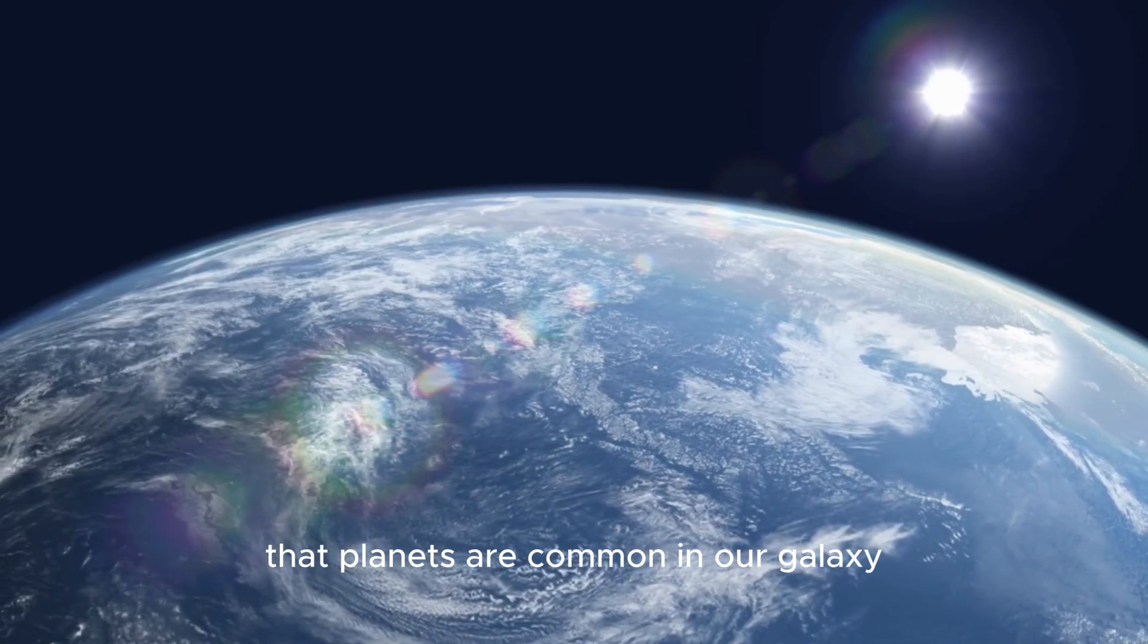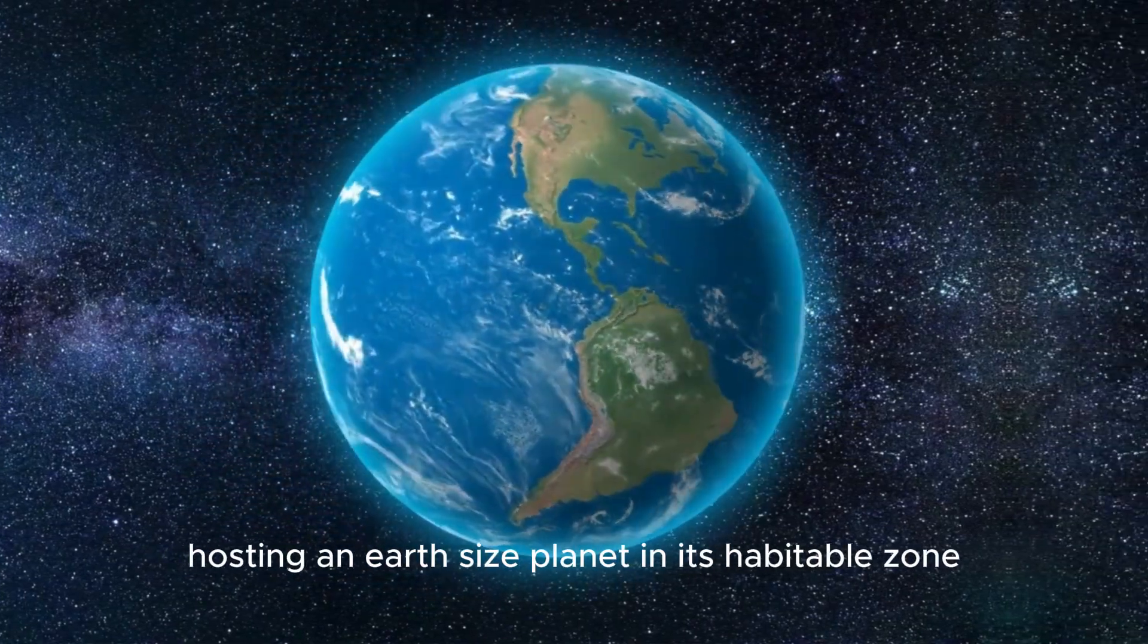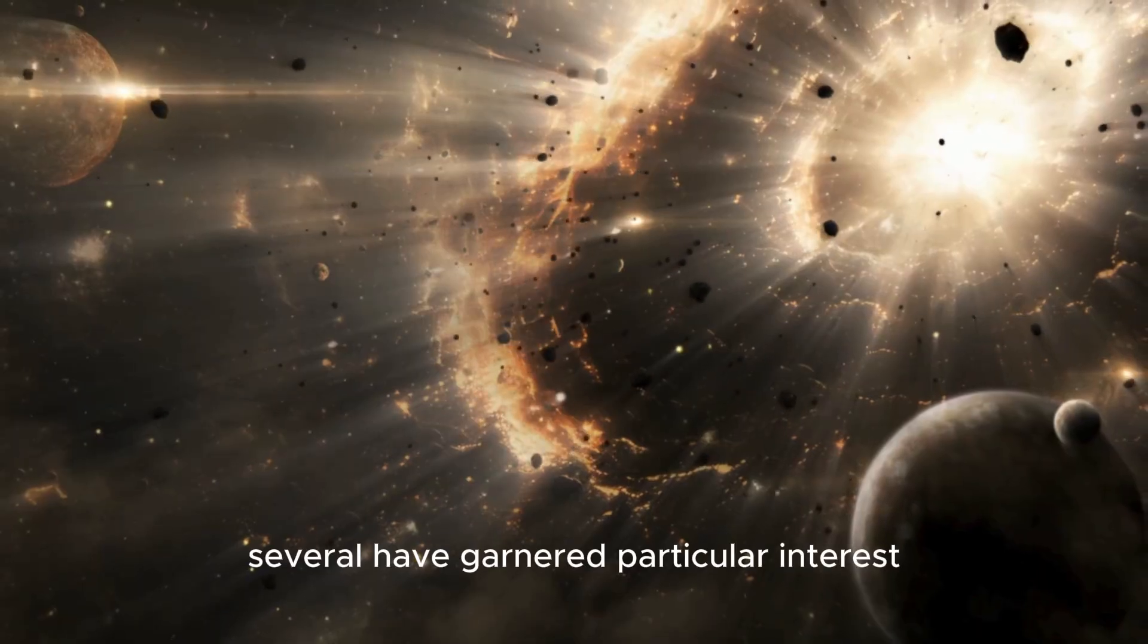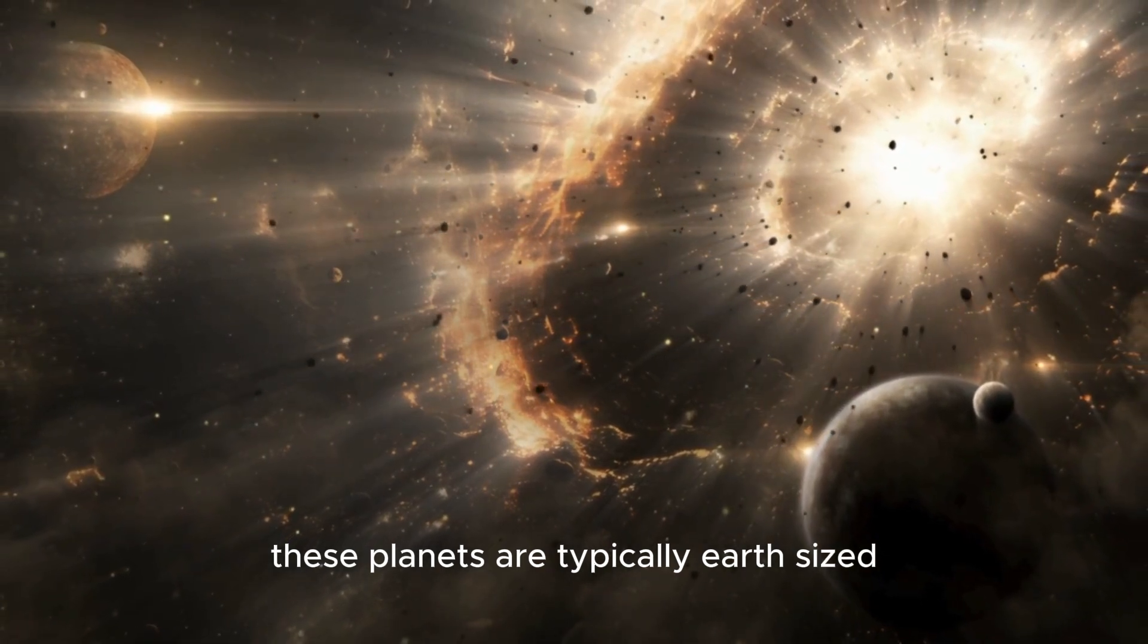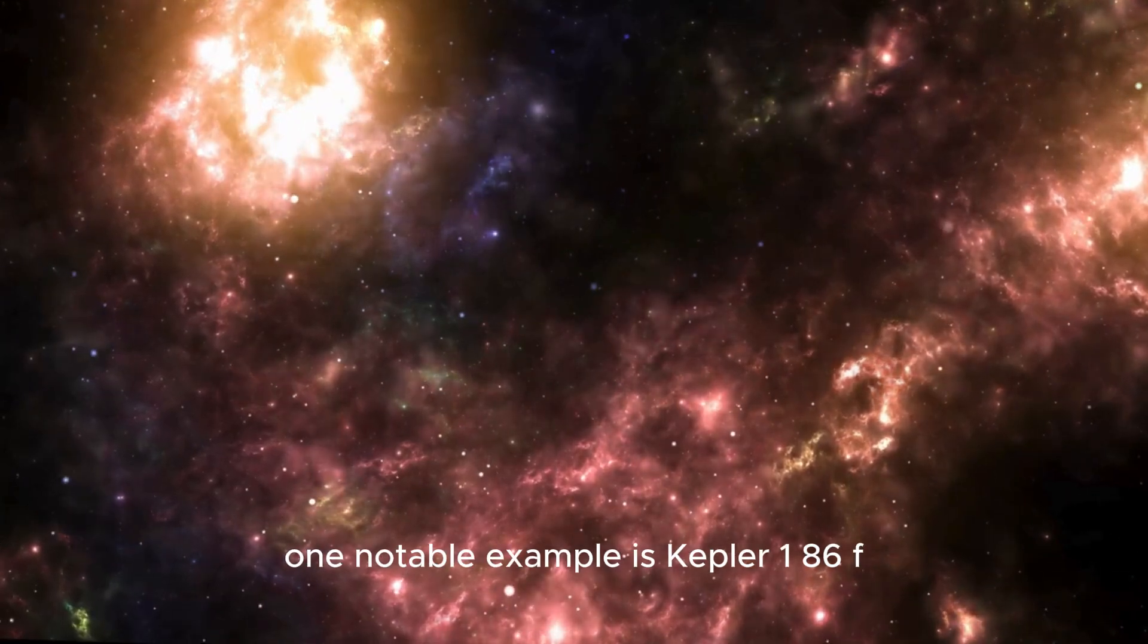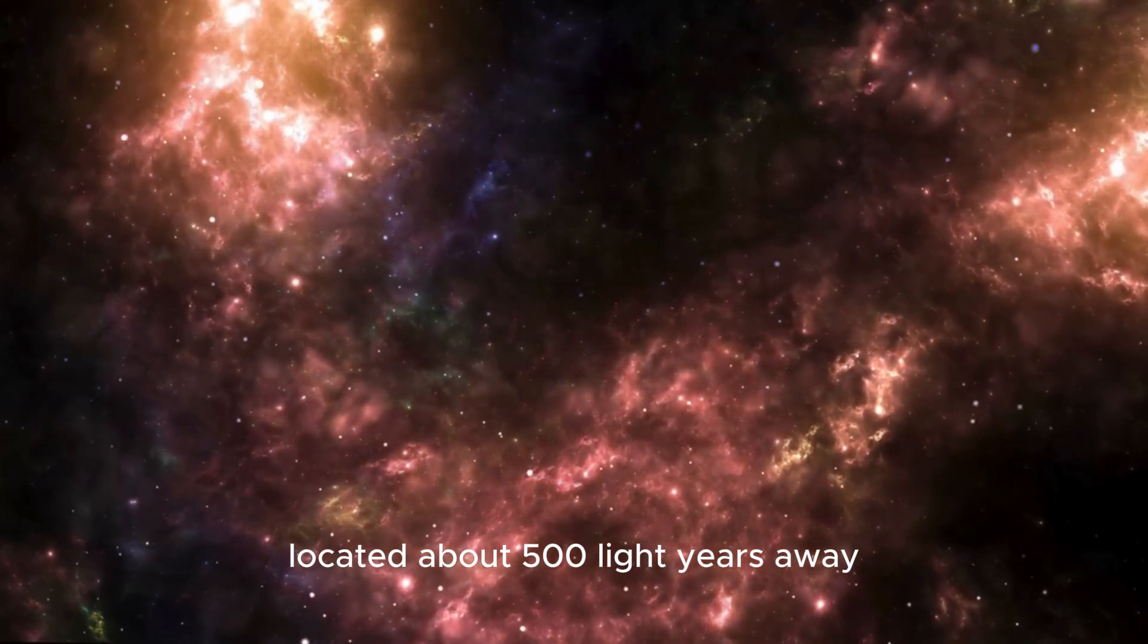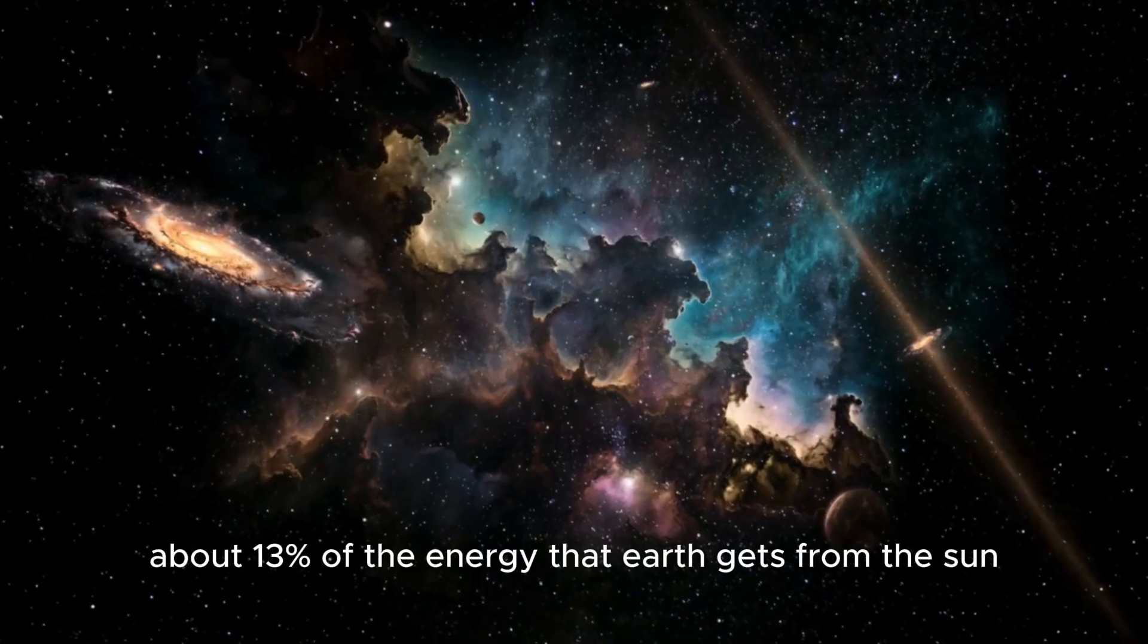Kepler's data revealed that planets are common in our galaxy, with an estimated 1 in 5 sun-like stars hosting an Earth-sized planet in its habitable zone, the region where conditions may be right for liquid water to exist. Among the many exoplanets discovered, several have garnered particular interest due to their potential to support life. These planets are typically Earth-sized or slightly larger, and orbit within their star's habitable zone. One notable example is Kepler-186f, the first Earth-sized planet found in the habitable zone of its star, located about 500 light-years away.